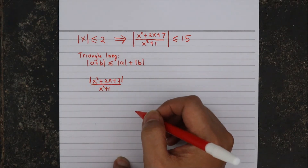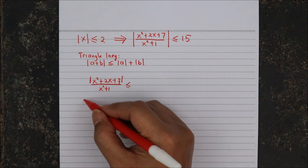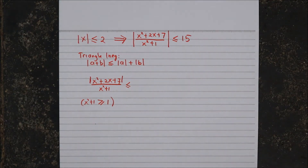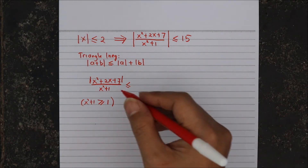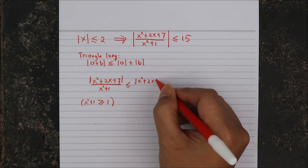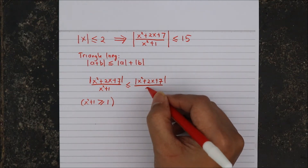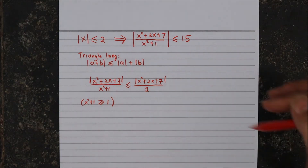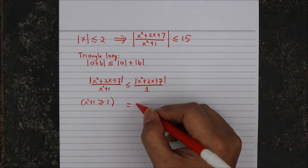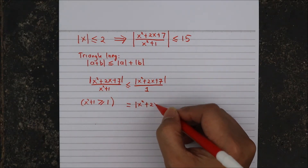In order to simplify the left hand side, notice that x squared plus 1 is always greater than or equal to 1. This implies that if we have something divided by x squared plus 1, it's going to be smaller compared to if we divide it by 1. So this whole thing is less than or equal to the absolute value of x squared plus 2x plus 7 divided by 1, which we rewrite as the absolute value of x squared plus 2x plus 7.